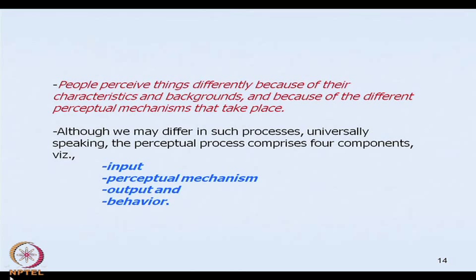The second component in the perceptual process is the perceptual mechanism, which basically comprises three sub-processes: selection, organization, and interpretation. Once our sense organs have detected a stimulus in the environment, a person will select, organize, and interpret it through perceptual selectivity, perceptual organization, and perceptual interpretation. Together, these three components are referred to as the perceptual mechanism.